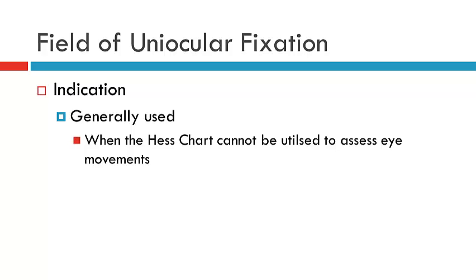However, the Hess chart has its own limitations, and an example of this is patients with suppression are unable to be assessed on the Hess chart. So in these instances, if you want to map or create a record of the ductions, then the field of uniocular fixation is a good alternative.